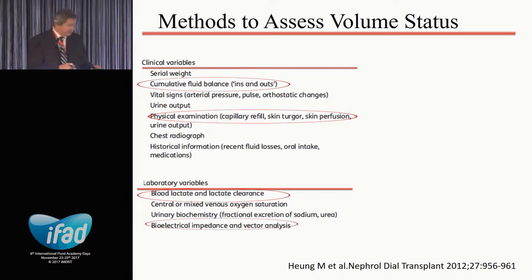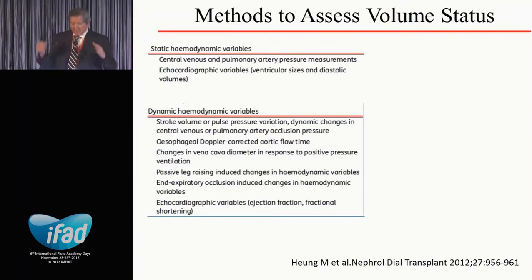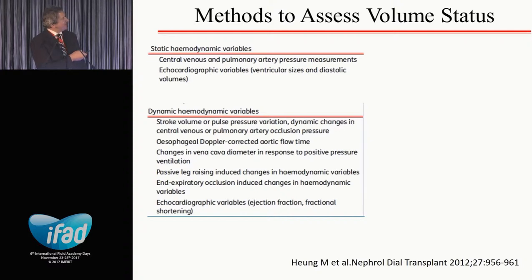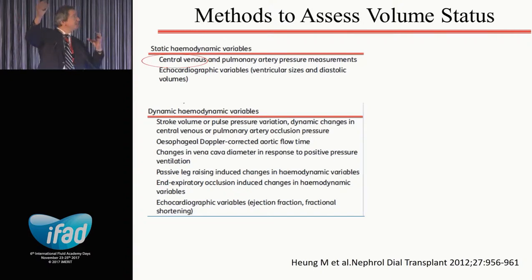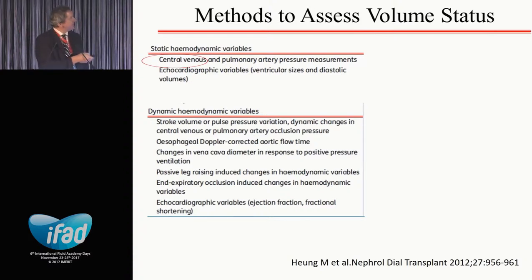You also need to assess dynamic variables in addition to static hemodynamic variables. Dynamic hemodynamic variables include stroke volume variation, pulse pressure variation, change in vena cava diameter, passive leg raising test, changes in PiCCO parameters, and echocardiography whenever available. You need a constellation of clinical parameters, biological parameters, and hemodynamic parameters - not only static but also dynamic. That is very important, and we use these three together in our ICU.